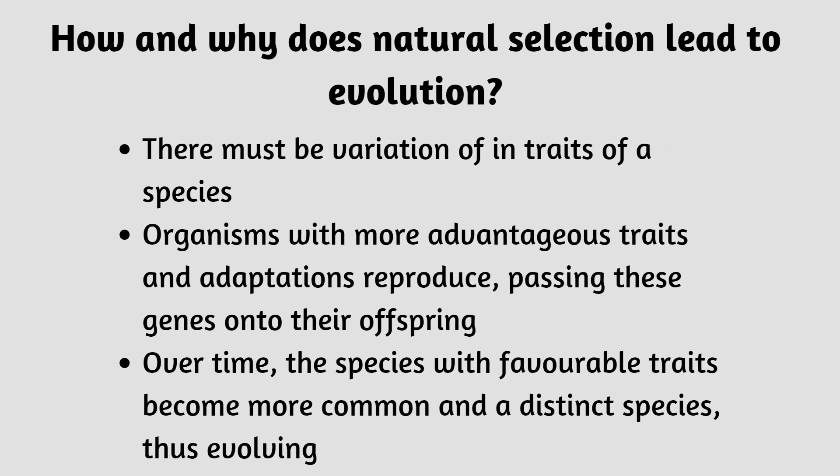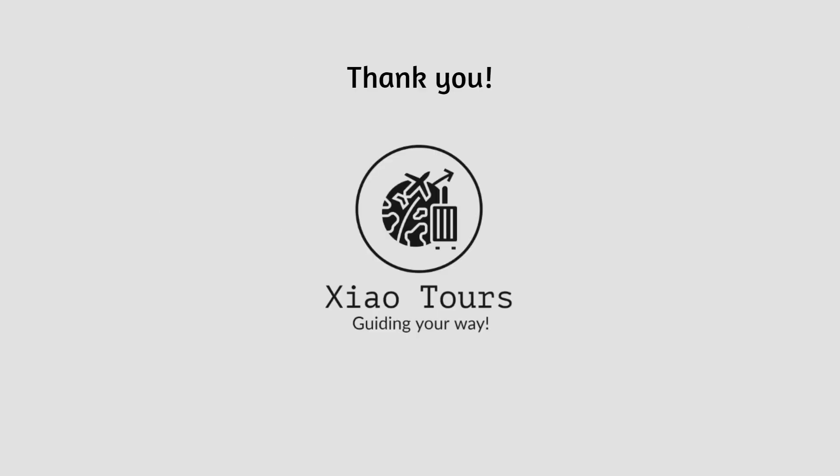To conclude this tour, let's take a look back at our focus question: why and how does natural selection lead to the outcome of evolution? Thanks to our visit to the beautiful islands of the Galapagos, Darwin's discovery, and the Grant finch study, we can conclude that the finches stemmed from one single population. After arriving at the Galapagos and its different islands, the birds faced new conditions and adapted to their environments. The traits of these finches changed, and ones with advantageous traits reproduced and evolved, becoming distinct species. Thank you for tuning in to the Galapagos Islands tour. Goodbye!